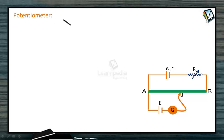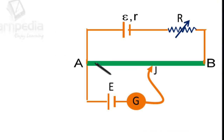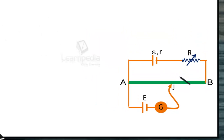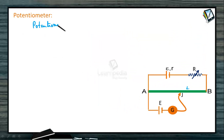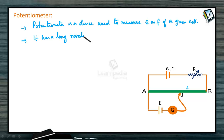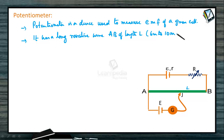Potentiometer is a device mainly used to measure EMF of a given cell, to compare EMFs of cells, and to measure the internal resistance of a given cell. It consists of a long resistive wire AB of length capital L, about 6 to 10 meters long, made up of manganin or constantan.